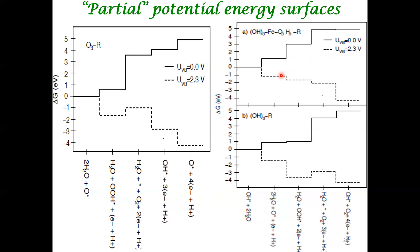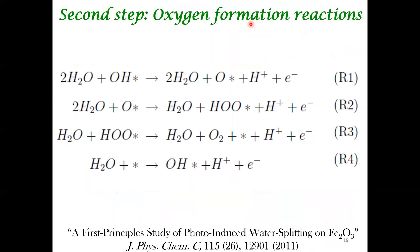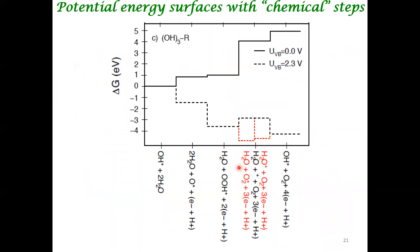This is why we call it a partial potential energy surface — we are only computing steps that involve coupled electron and proton transfer. But there can also be non-electrochemical (chemical) steps that are possible in between. Those can also be calculated, just as in heterogeneous catalysis — for example, the adsorption/desorption of H₂O from an active site, which doesn't involve any electron or proton transfer.